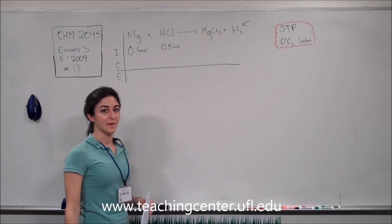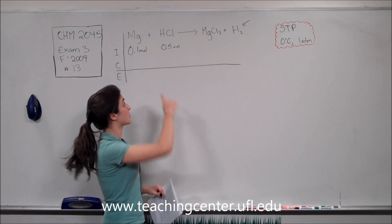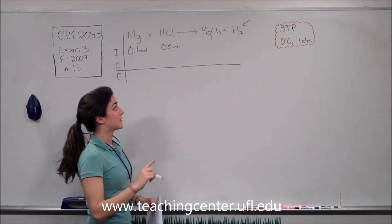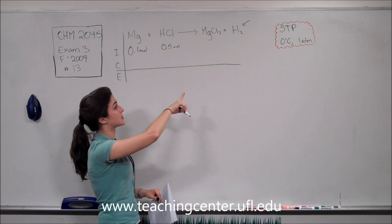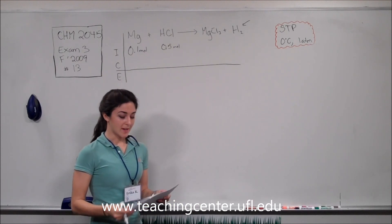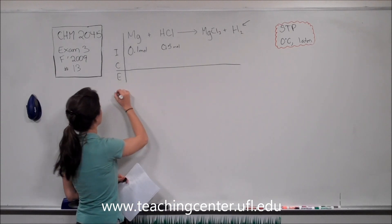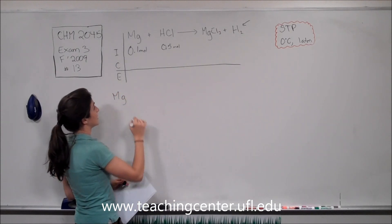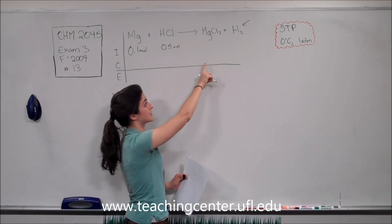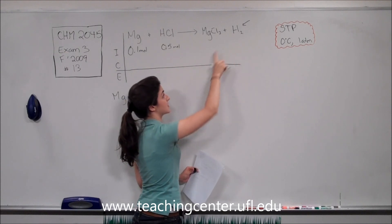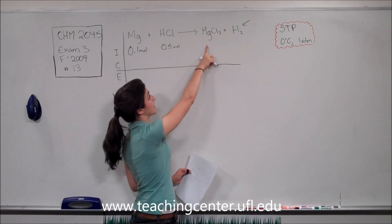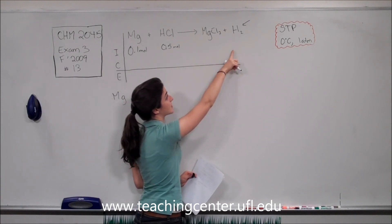So to continue this problem, we need to figure out what the limiting reagent is, because one of these is probably going to be used up before the other one is. So to do that, we need to figure out how much each of these is going to produce of our products. So we'll start with magnesium here. Because both of these produce one equivalent of our product, it doesn't matter which product species we use, because they produce the same amount.